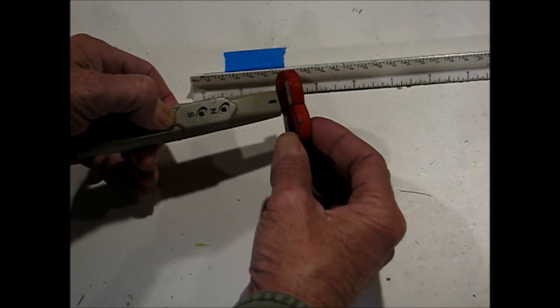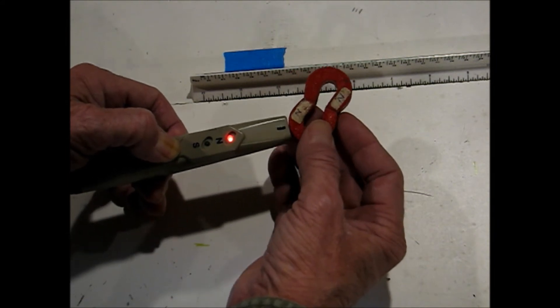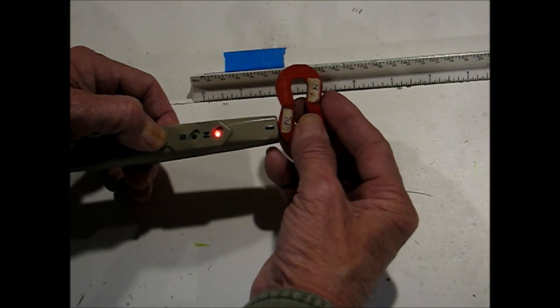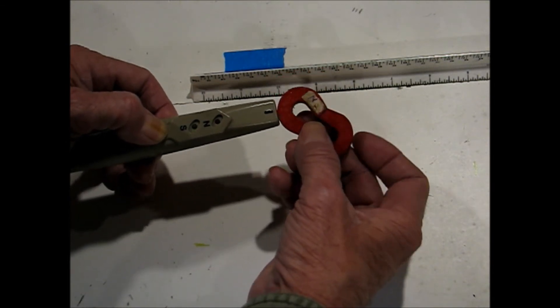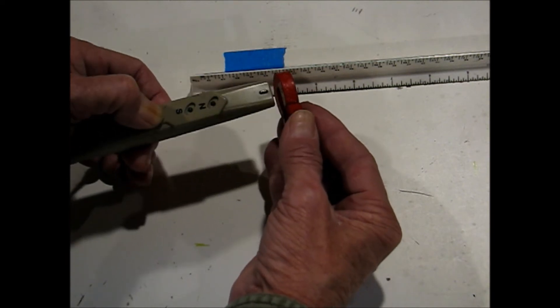When I put the checker up here, you can see that I get a north, but it won't read the south. Again a north and not the south. North magnetic field is a lot stronger than the south.